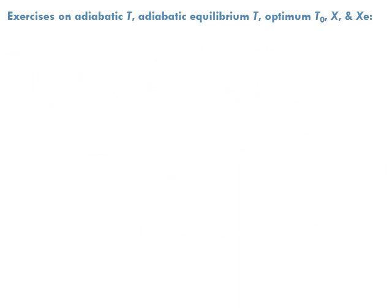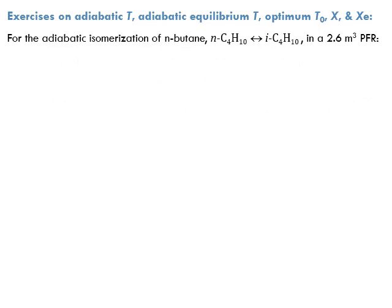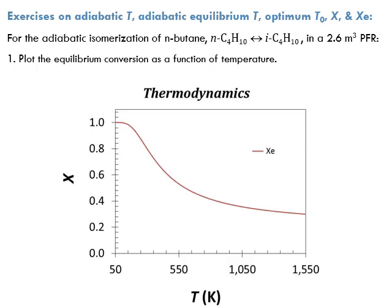Now for the exercises on adiabatic temperature, adiabatic equilibrium temperature, optimum feed temperature, x and x_e: for the adiabatic isomerization of n-butane in a 2.6 m³ plug flow reactor, let's first plot the equilibrium conversion as a function of temperature. The equilibrium conversion decreases as temperature increases because the reaction is a reversible exothermic reaction.